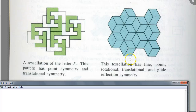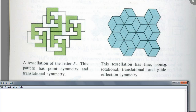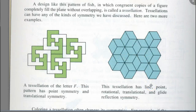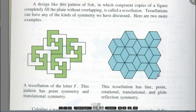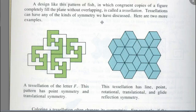I want you to think as a team about how you see all those symmetries. How does this tessellation have line, point, rotational, translational, and glide reflection symmetry? One thing to remember is that you have to imagine this figure on the right side is going on forever, expanding in all directions. If it didn't, it wouldn't make sense. But if it does, you can see how it would have all those symmetries.